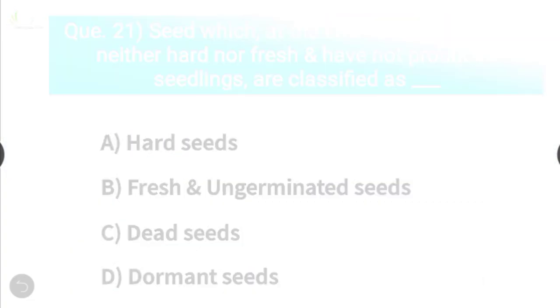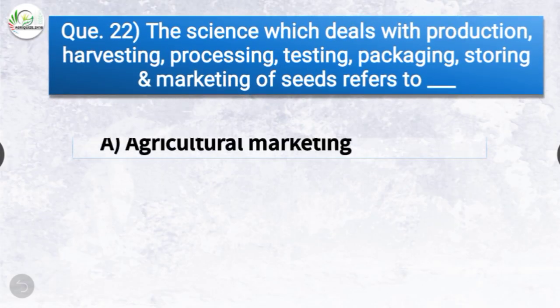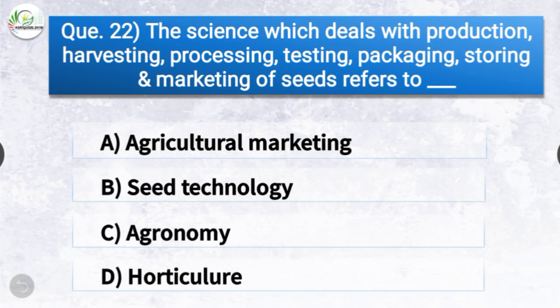Question number twenty-two: The science which deals with production, harvesting, processing, testing, packaging, storing, and marketing of seeds refers to — the options are agricultural marketing, seed technology, agronomy, or horticulture. The correct answer is option B — seed technology.